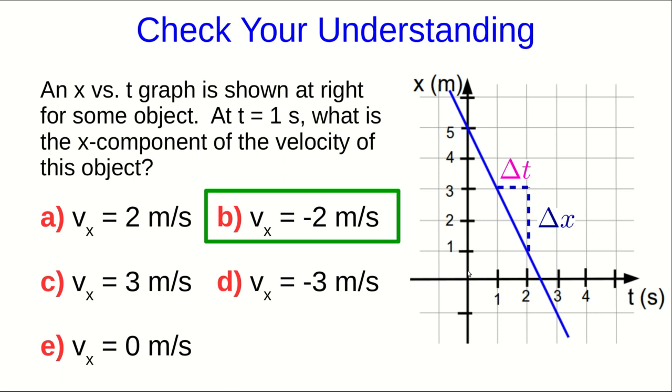A very common mistake that students make is that they will notice that x is three meters at t equals one, and so they'll take three meters divided by one second and come up with a vx of three meters per second. But that can't be right.